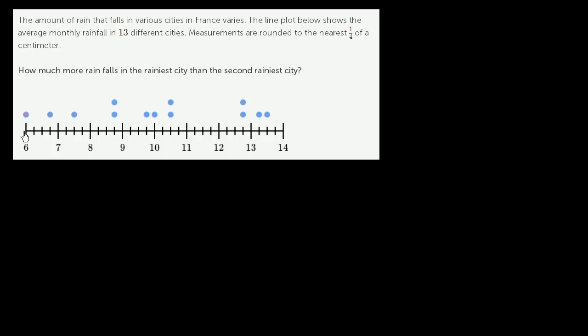For example, putting this dot here shows that this is the only city that had 6 centimeters of average monthly rainfall. Here, this shows that there were two cities that had an average monthly rainfall of, looks like, 8 and 3/4 centimeters.